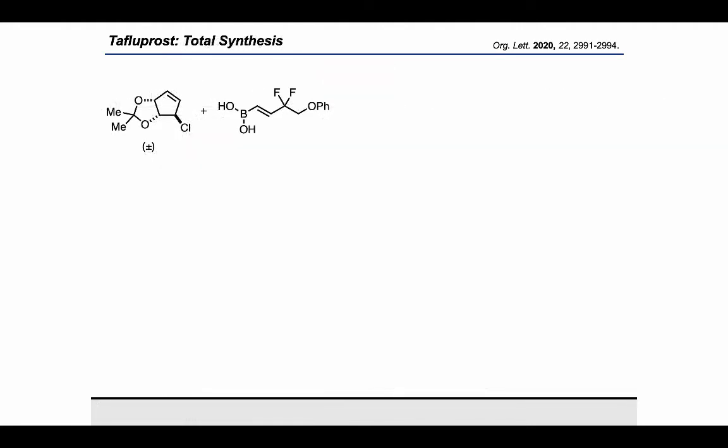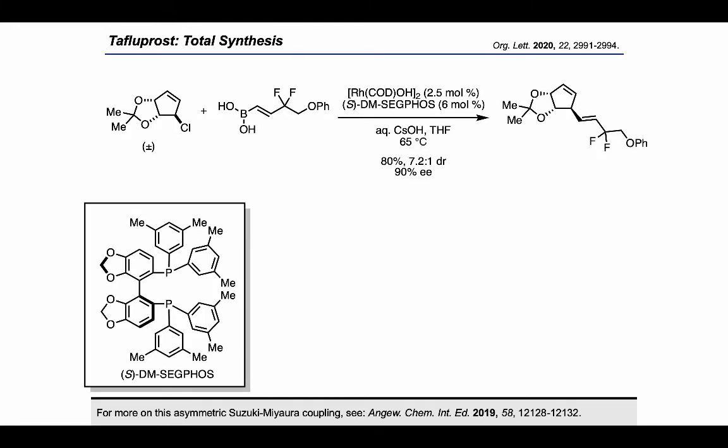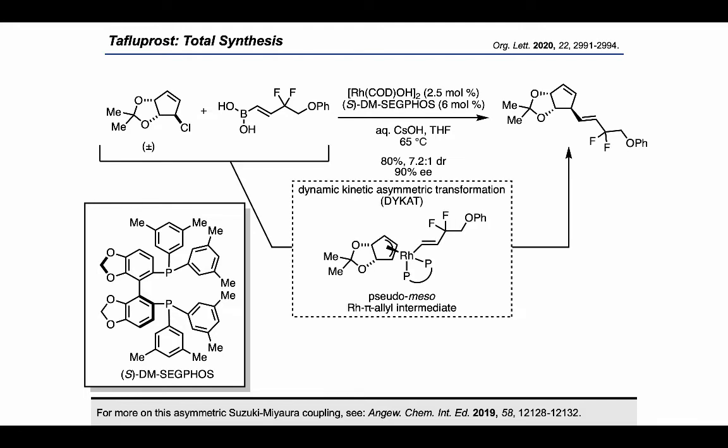So now they had both fragments ready to go. After some reaction optimization, they found that they could use dimethyl SegPhos to get a good yield and excellent diastereo- and enantioselectivity in this asymmetric Suzuki-Miyaura coupling. They proposed that this reaction is a dynamic kinetic asymmetric transformation, or DYKAT, where both enantiomers of the allylic chloride starting material pass through the same pseudomeso rhodium-pi-allyl complex. Here we're saying pseudomeso instead of just meso, because it looks like there's a mirror plane on the substrate, but the catalyst it's bound to has chirality that disrupts the mirror plane.